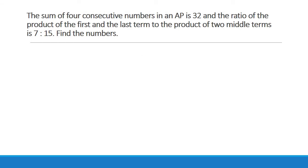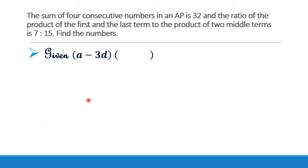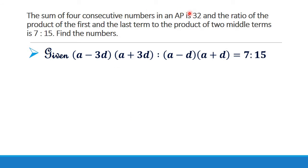Now it is given that the product of the first and last term to the product of the two middle terms is 7 is to 15. We already found A. Now it remains to find D. So take: A minus 3D into A plus 3D, to A minus D into A plus D, equal to 7 is to 15. The first term is A minus 3D and the last is A plus 3D, and the middle terms are A minus D and A plus D.